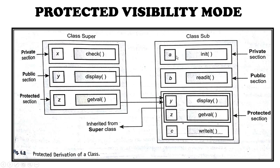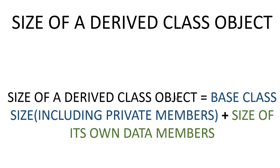In the same way, in protected visibility mode, the public and protected members of the base class will become protected members of the new class. Now, there is often a question about finding the size of the derived class object. To find the size, we do addition: the size of the base class — including the private members — plus the size of the members of its own class. Therefore, this gives us the size of the derived class object.